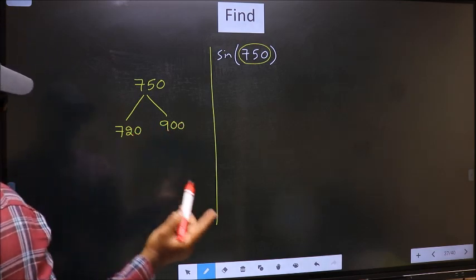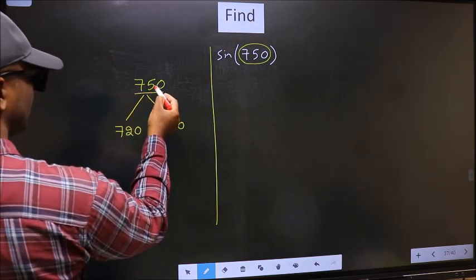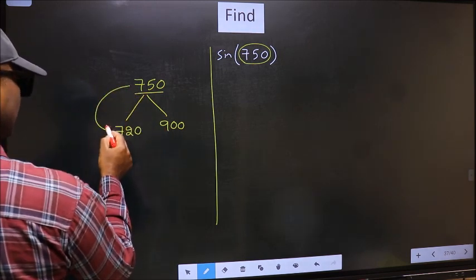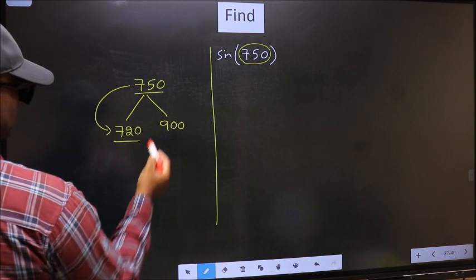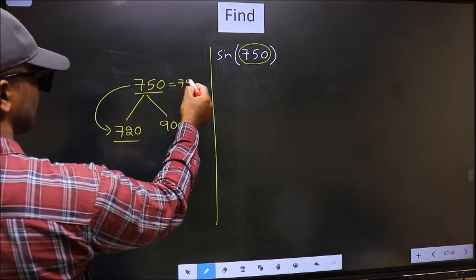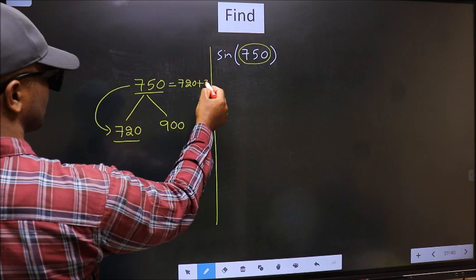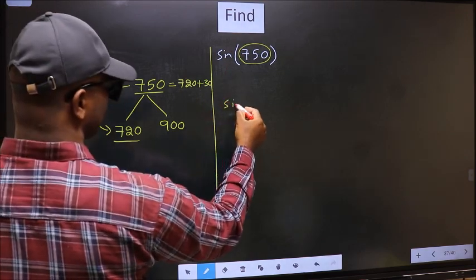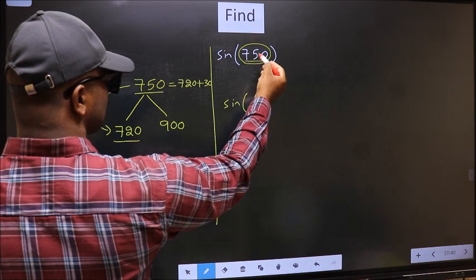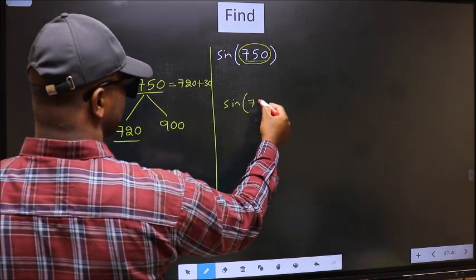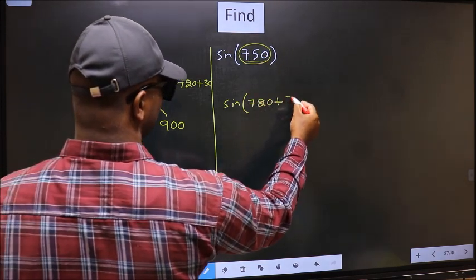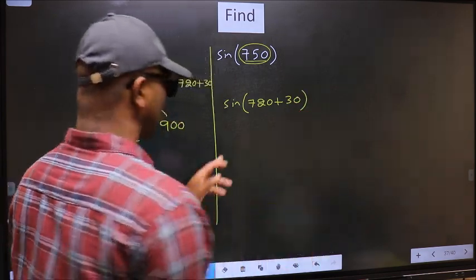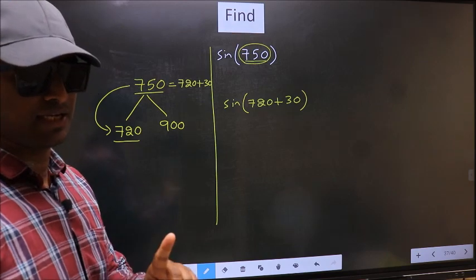Okay. Next. Now 750 is close to which number? This is close to 720. So now 750 should be written as 720 plus 30. So this will become sin—in place of 750, now we should write 720 plus 30. This is your step one.